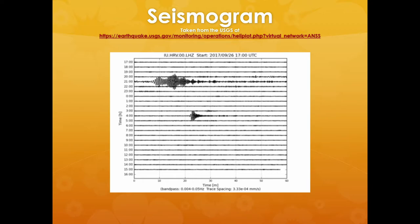This is what a seismogram looks like. You'll see the main shock up towards the top quarter, and then about halfway down you see a smaller waveform — that's an aftershock. Higher than the main shock, you can see some tiny shocks that might be foreshocks, though they're hard to point out on this one.